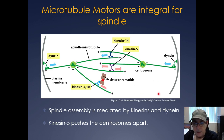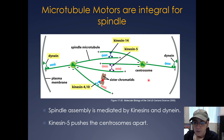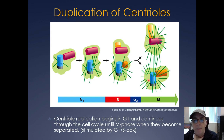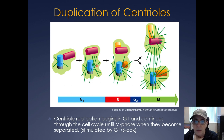Kinesin 5 is pushing the centrosomes apart, kinesin 14 is pulling them together, and cytoplasmic dynein — a minus-end directed motor — is helping to position the centrosome. Centrioles undergo a replication process throughout the cell cycle. Not a lot is known about how they're replicated; they seem to break off, a new one starts forming, and eventually during M phase they move to opposite poles of the cell.